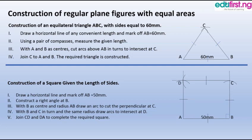At the point of intersection, label it C, then join C to A and B — that gives us our equilateral triangle with all sides equal. Second, let's construct a square given the length of sides. Draw a horizontal line of a convenient length and mark A and B to be 50 millimeters. Construct a right angle at B, that is a perpendicular line to AB. With B as center and radius AB, draw an arc to cut the perpendicular line at C. With B and C in turn and the same radius, draw arcs to intersect at D. Join CD and AD to complete the required square.